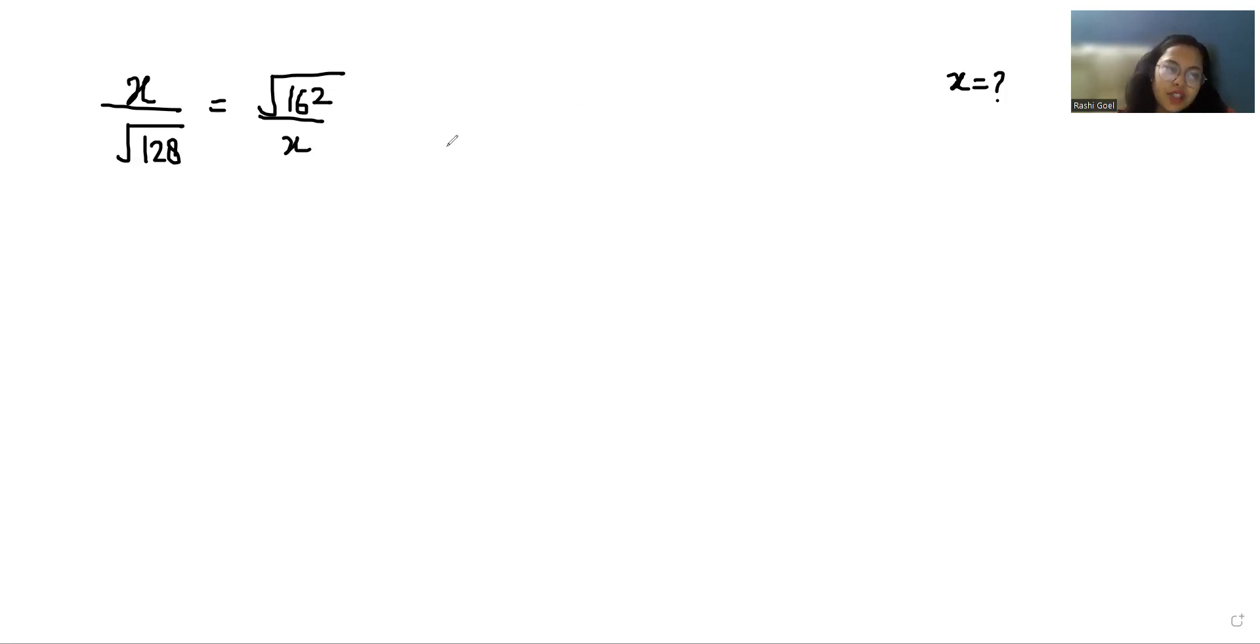So let's start with today's video solution. I am going to start with doing cross multiplication, so it becomes x times x equals under root 162 times under root 128, so it becomes x squared.